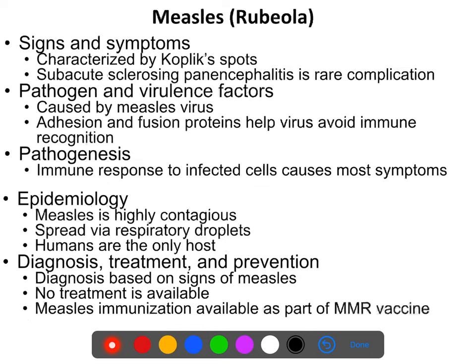Measles, also called rubiola, is characterized by very specific spots — not pustules like in a pox virus, but discolorative macules called Koplik spots, which are a diagnostic symptom. The standard set of measles symptoms does not typically kill, but there are a number of complications that can arise from it that can become deadly.